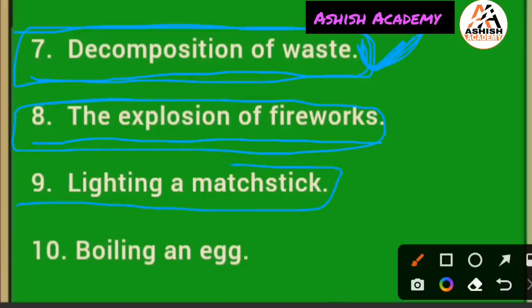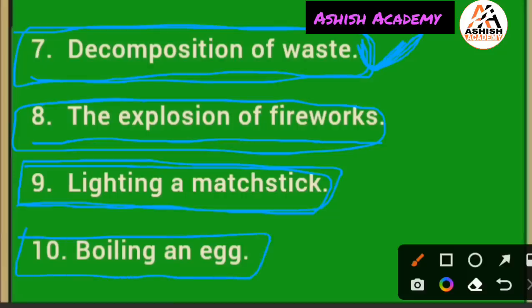Next example: lighting of a matchstick — maachis ki tili ka jalna. This is also a chemical change. Next example: boiling an egg. There are many examples all around us. Whatever changes occur in which a new substance is formed after a chemical reaction, we call them chemical changes. And those in which no new substance is formed, we call them physical changes.